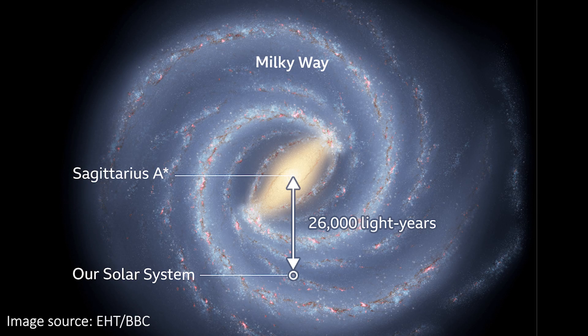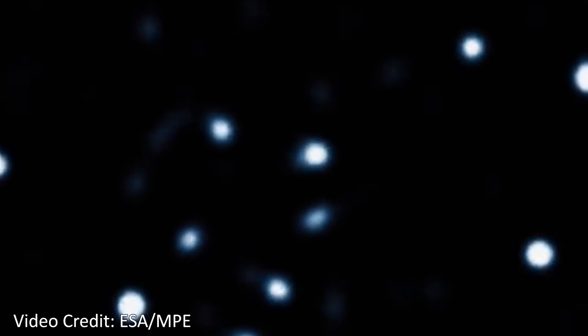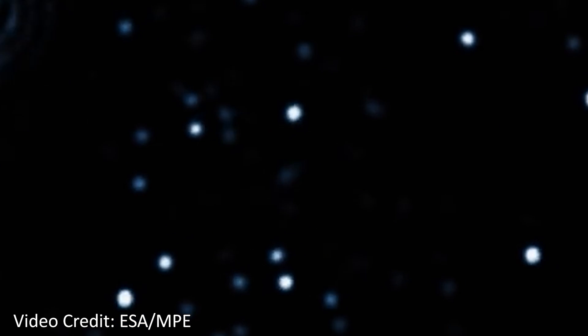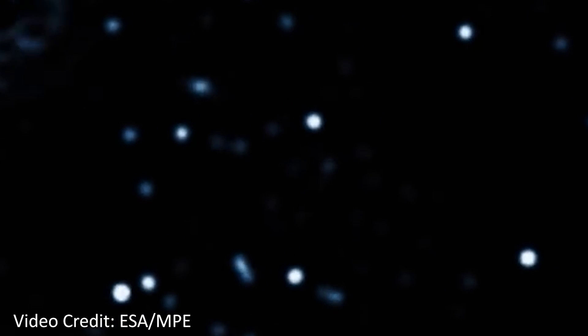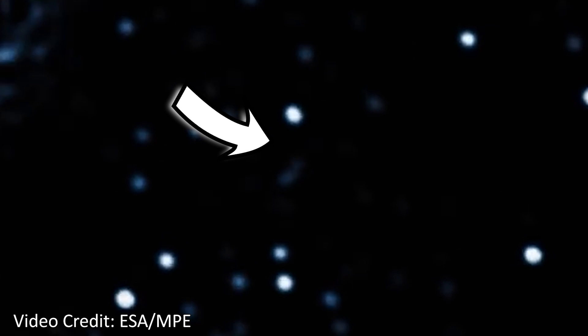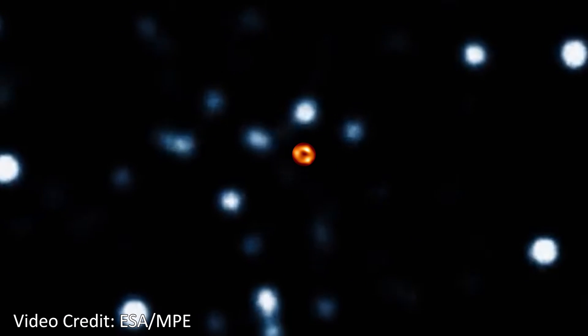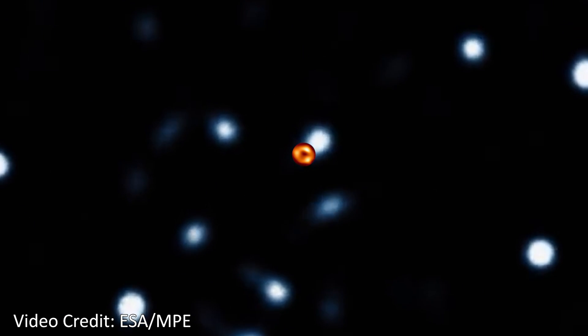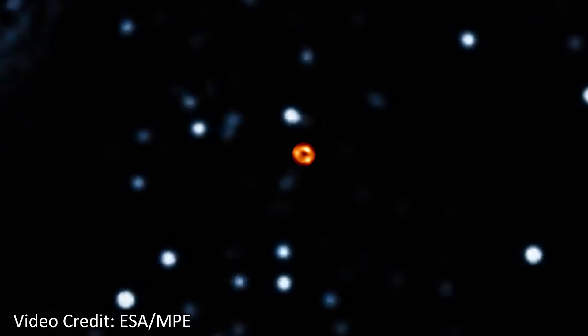The image is also the first direct evidence that the thing at the heart of our galaxy is actually a black hole. We knew there was something there — incredibly massive and incredibly small — so it pretty much had to be a black hole because we don't know anything else it could have been. But now we've seen it, and we can say for sure it definitely is a black hole.